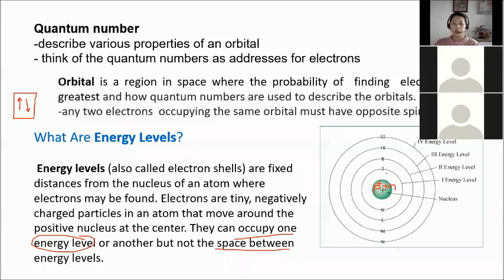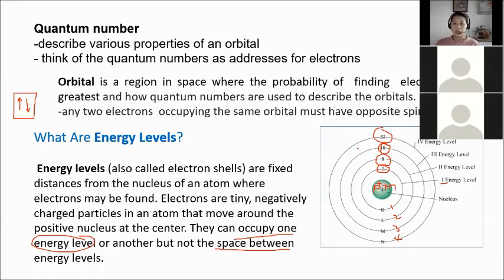The energy levels are labeled K, L, M, and N. The first level (K) can hold a maximum of 2 electrons, the second level (L) a maximum of 8, the third level (M) a maximum of 18, and the fourth level (N) a maximum of 32. There are no electrons between energy levels — electrons are situated only at the energy levels.